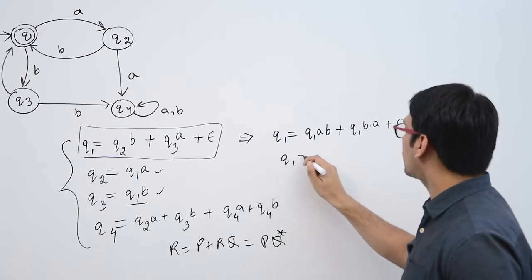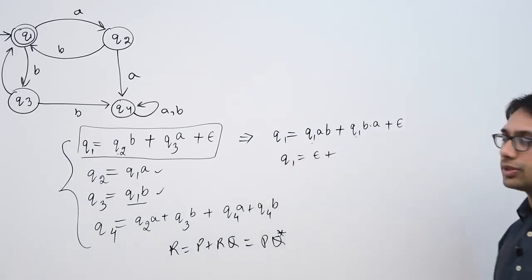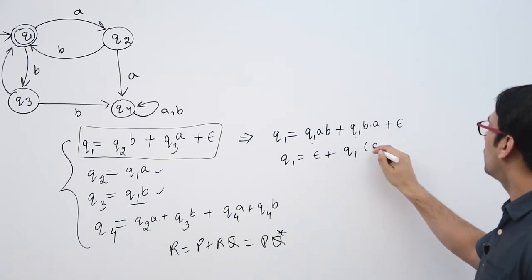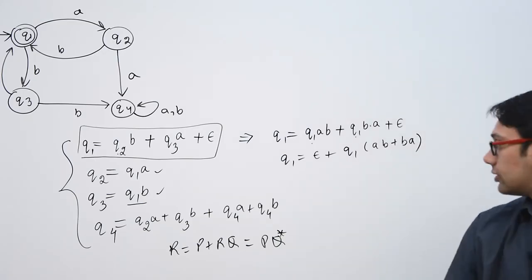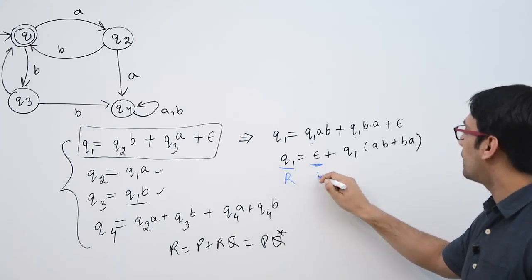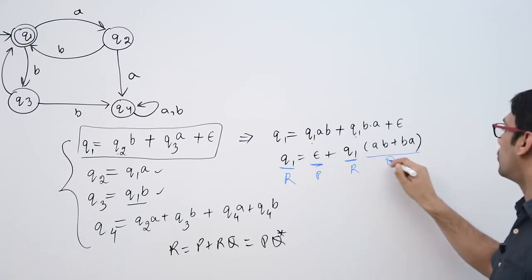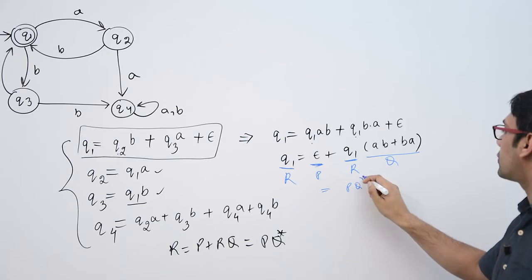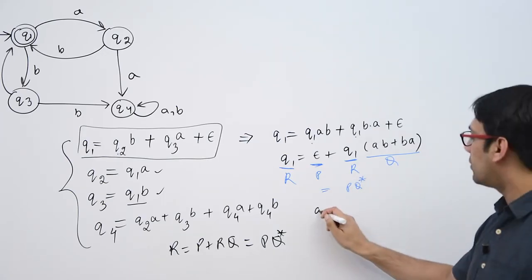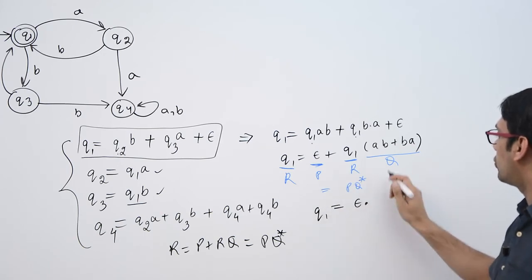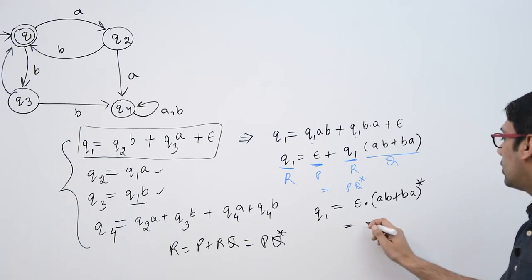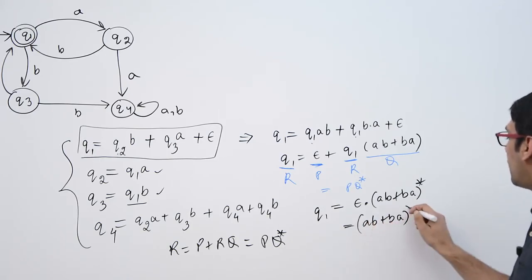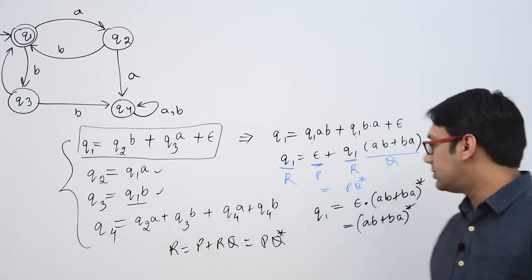This can be written as Q1 = epsilon + Q1·(AB + BA). Comparing with Arden's theorem where R = P + RQ gives R = PQ*, we identify R as Q1, P as epsilon, and Q as (AB + BA). So Q1 = epsilon·(AB + BA)*, which is equivalent to (AB + BA)*. Therefore the complete finite automata is represented by the regular expression (AB + BA)*.